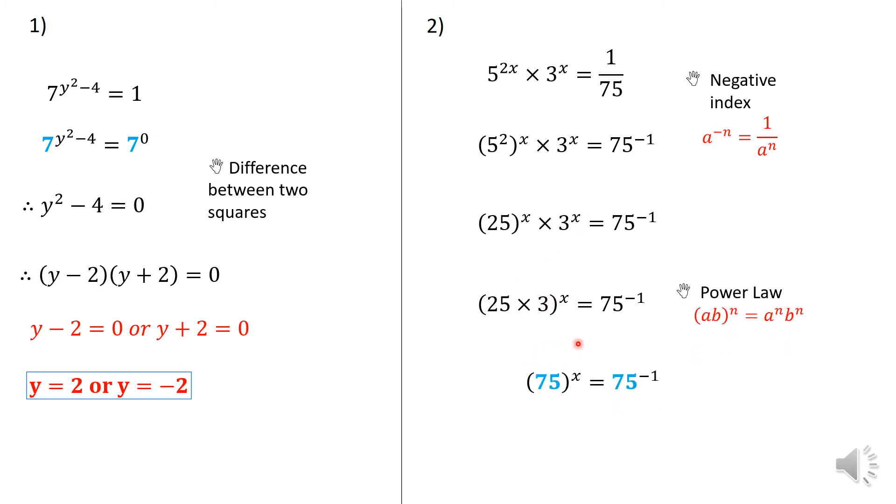So that comes from the power law. So again, now it brings me back to the part where the bases are the same, and I use this color coding for you to see. So once the bases are the same, I simply equate the indices. So therefore, X is equal to negative 1.